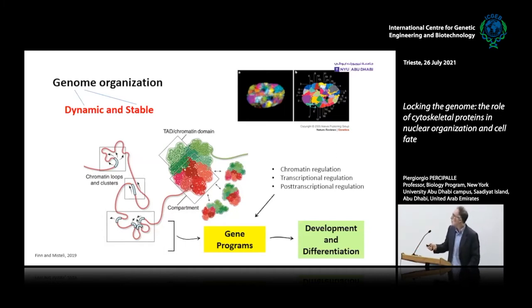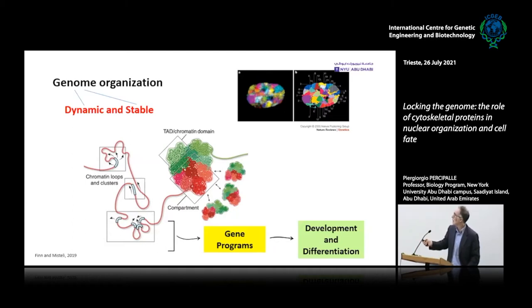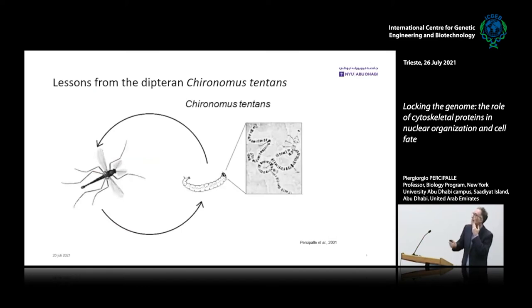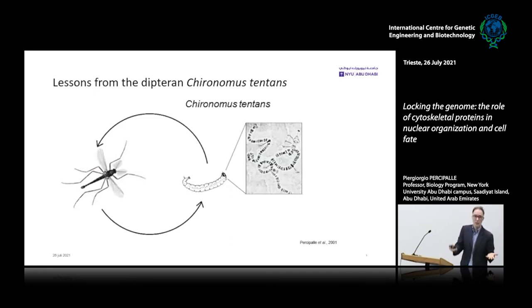We look at three different layers: chromatin regulation, transcriptional regulation, and post-transcriptional regulation. Today I'll focus on chromatin regulation and transcription regulation, and how they are intertwined with the way the architecture of the genome is established. In particular, as the title of the talk highlights, we are looking at the role of cytoskeletal proteins — in particular beta-actin — in gene expression regulation and genome organization.